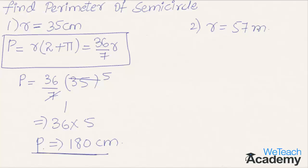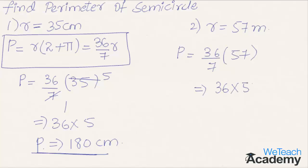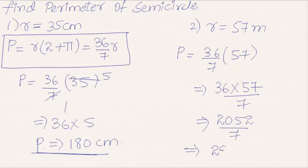Coming to the next one where radius is equal to 57 meters — substituting the given value of radius in the formula, we get 36/7 into 57. Multiplying the terms in the numerator, 36 into 57 gives 2052, divided by 7. Dividing 2052 by 7, we get the result as 293.142 meters as the perimeter.